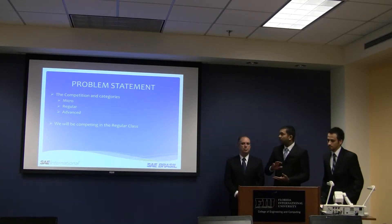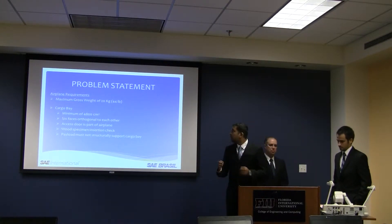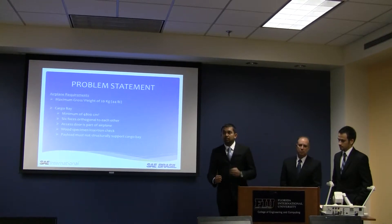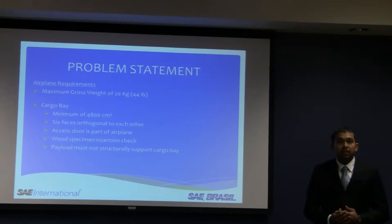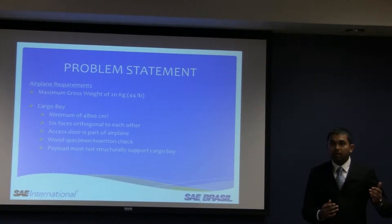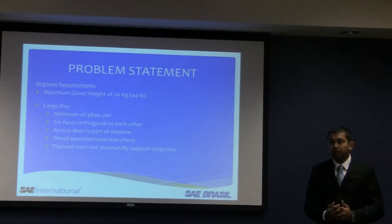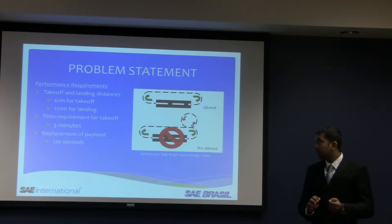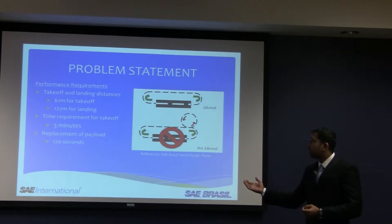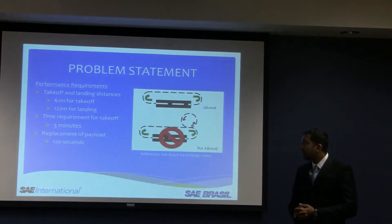There are three different classes we can compete in: regular, micro, and advanced. We'll be competing in the regular class. The main objective of our class is to lift as much weight as we can with a 20 kilogram weight restriction. We will be judged on the ratio of our payload — the weight of the payload over the weight of our airplane without the payload — and our ability to correctly predict the amount of weight we'll be able to carry in the competition. These are some of the other restrictions we have to abide by to avoid losing points, like 61 meters for takeoff and 122 meters for landing.